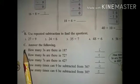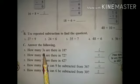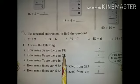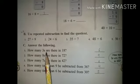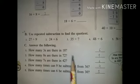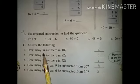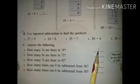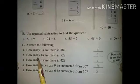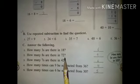Point C: answer the following. First question — how many 3's are there in 18? 18 divided by 3, then the answer is 6.